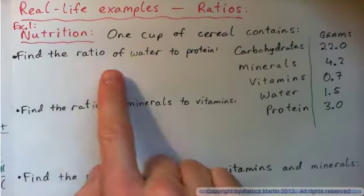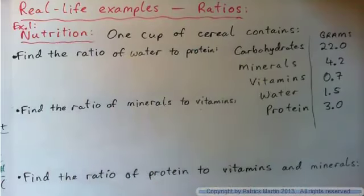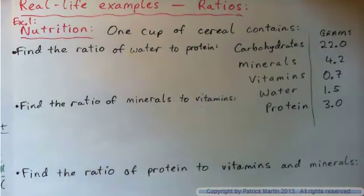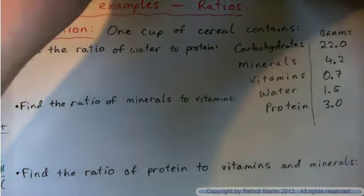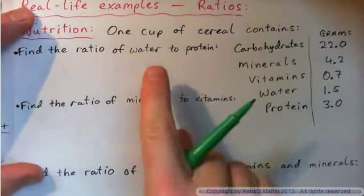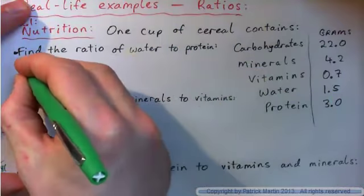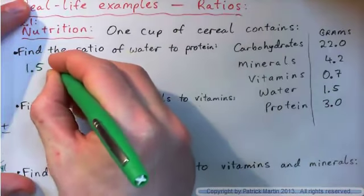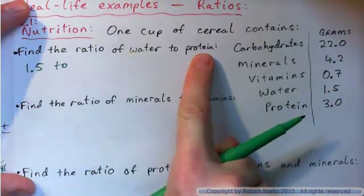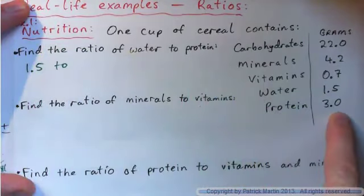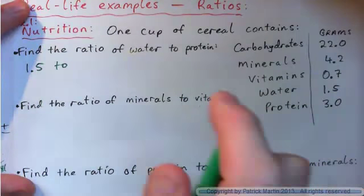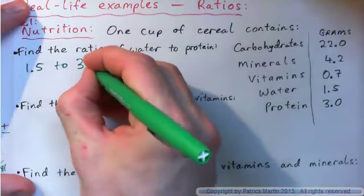So we've got to find the ratio of water to protein first of all. Water to protein, the amount of water is 1.5, so 1.5 to protein 3.0, right?